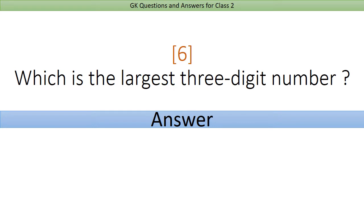What is the largest three-digit number? Answer: 999.